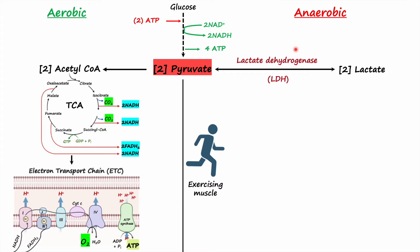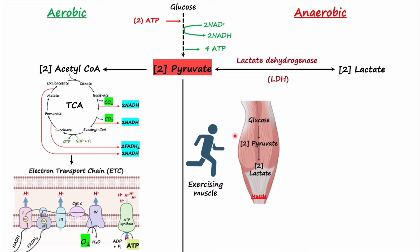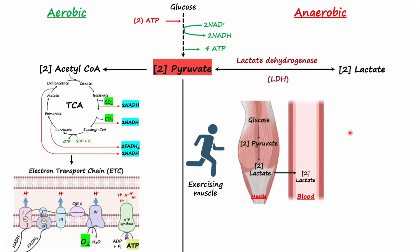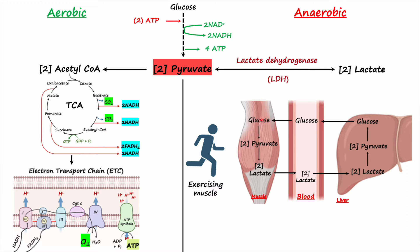Taking the example of exercising muscle: during anaerobic conditions, glucose is converted through glycolysis into pyruvate, and pyruvate is then converted into lactate. Lactate is transported into the blood and then to the liver. In the liver, lactate is converted back to glucose, and through circulation, glucose is transported back to the skeletal muscle where it can again be used to synthesize energy through glycolysis.